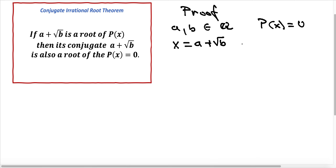And the other solution is x equals a minus square root of b, which is the conjugate. With the assumption that the polynomial function p of x has rational coefficients.